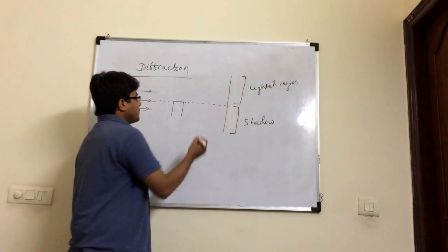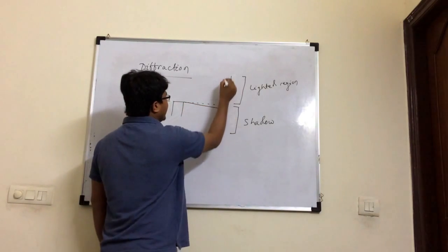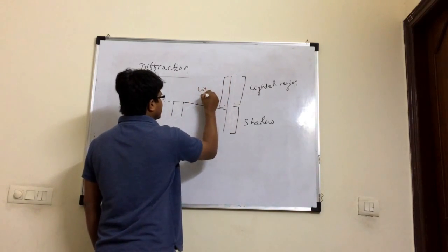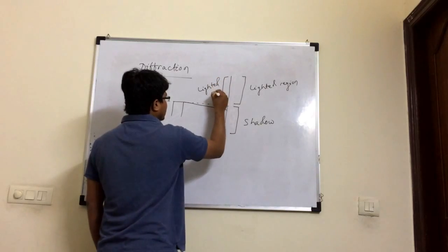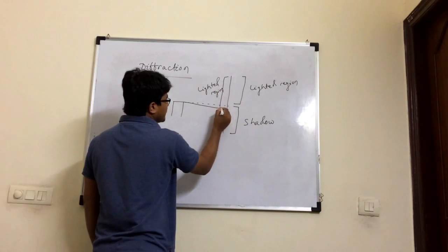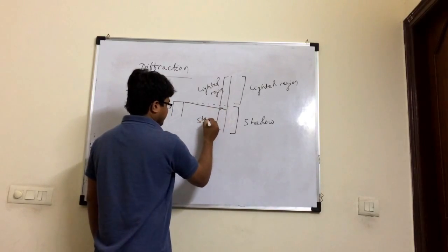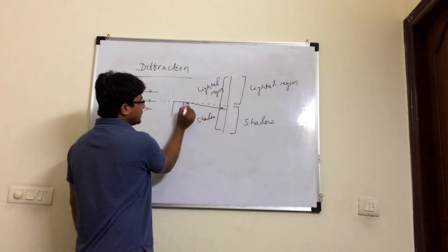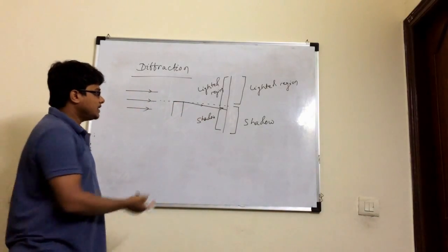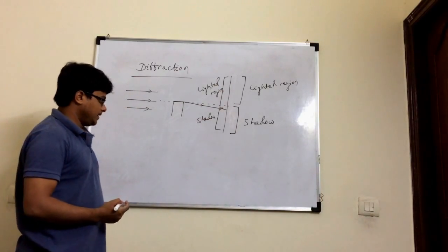In practice, you will not get this ideal shadow. You will see that the lighted region will enter into the shadow region. Practically, the lighted region slightly enters into the shadow region. This will happen only if the light ray bends at the edge of the obstacle. This bending of light around an obstacle is called diffraction.